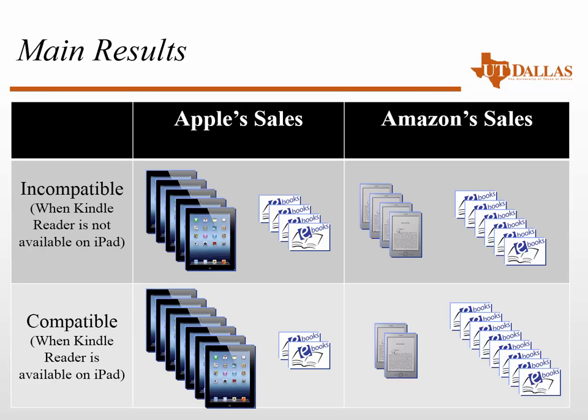In a sense, being compatible is a way of differentiation. By being compatible — by making the Kindle reader app available on iPad — Apple focuses more on the hardware market while Amazon focuses more on the eBook market. Thank you very much for watching this video. For more results, please read our paper.